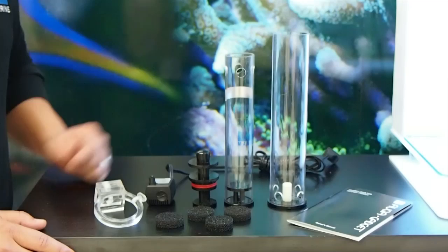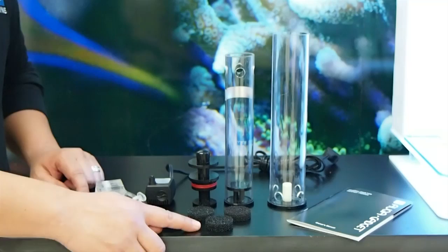When opening your package, you'll find the following items: an instruction manual, an outer chamber, an inner chamber, a cap, a total of four sponges, your pump, and your clamp bracket.